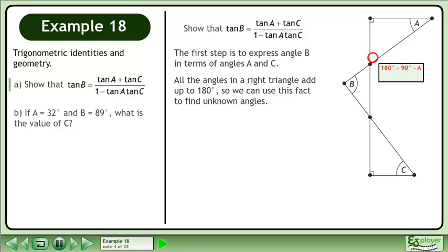Subtract 90 degrees and angle A from 180 degrees. Simplify to get 90 degrees minus A. Now subtract 90 degrees and angle C from 180 degrees. Simplify to get 90 degrees minus C.